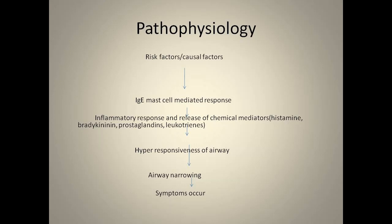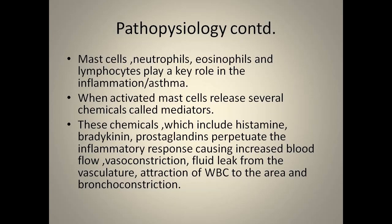The mast cells, neutrophils, eosinophils, and lymphocytes play a key role in the inflammation of an asthmatic attack. Mast cells release several chemicals that aggravate the inflammatory response, causing increased blood flow, bronchoconstriction, fluid leak from the vasculature, and attraction of white blood cells to the area.